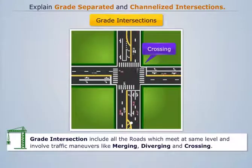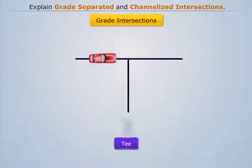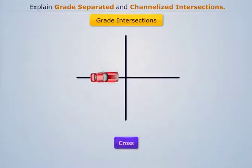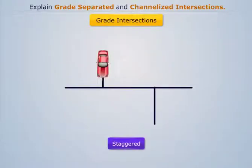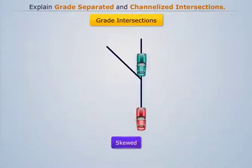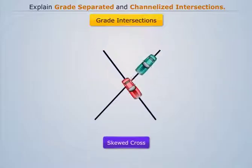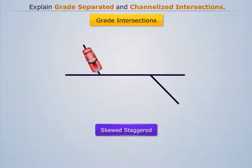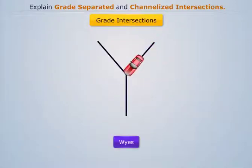The various forms of intersections are T, cross, staggered, skewed, skewed cross, skewed staggered, Y's, and multiple.